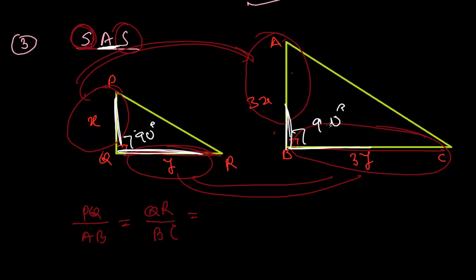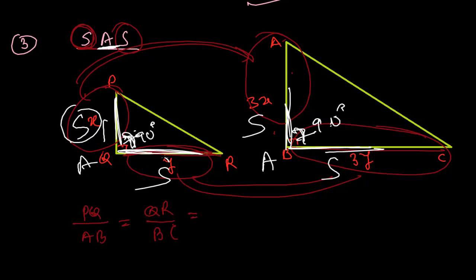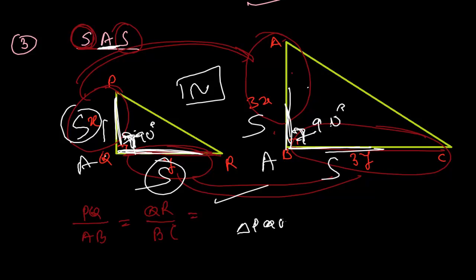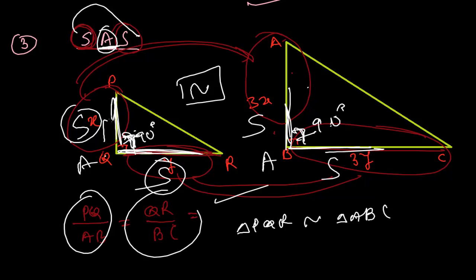So: if two sides are proportional and the angle between those two sides is equal, then we can say triangle PQR is similar to triangle ABC. This is the Side-Angle-Side criterion. If only the sides were proportional but the included angle was different, we could not call them similar.